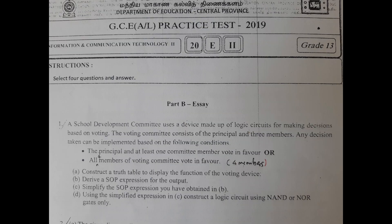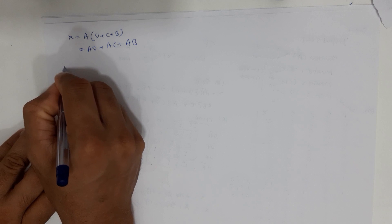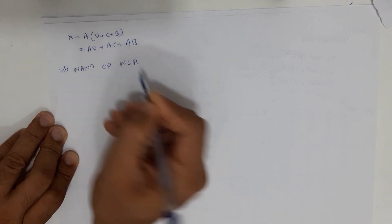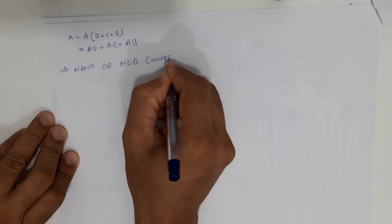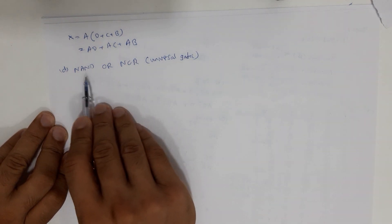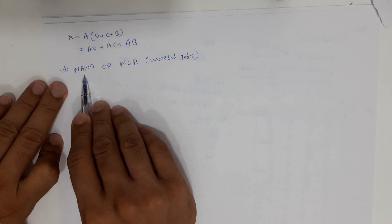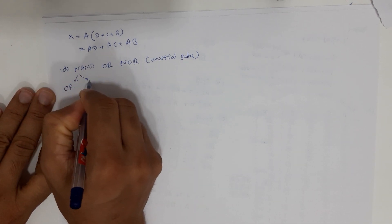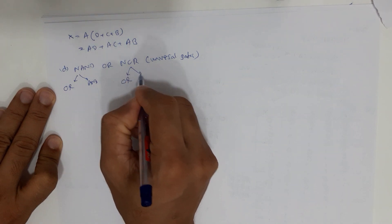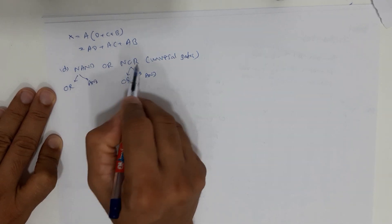That completes Part C. Part D asks us to construct the logic circuit using only NAND or NOR gates. We have to use either NAND or NOR gates, which are known as universal gates. From a NAND gate we can make both an OR gate and an AND gate, and similarly from a NOR gate we can make both OR and AND gates, so we have a choice of which to use.